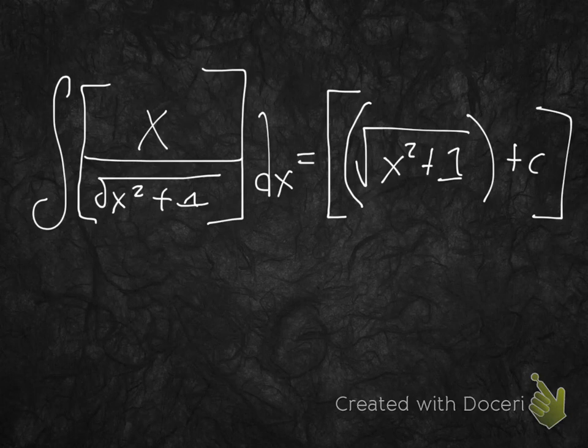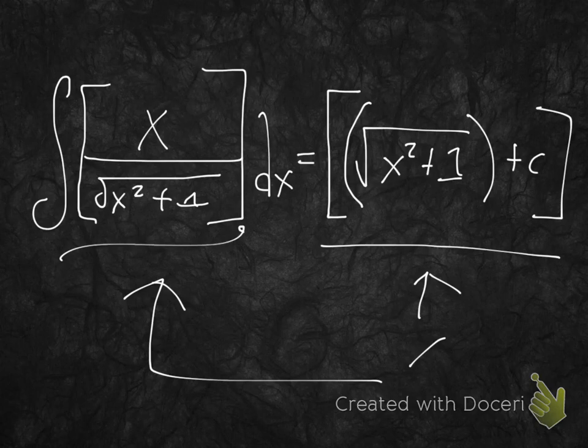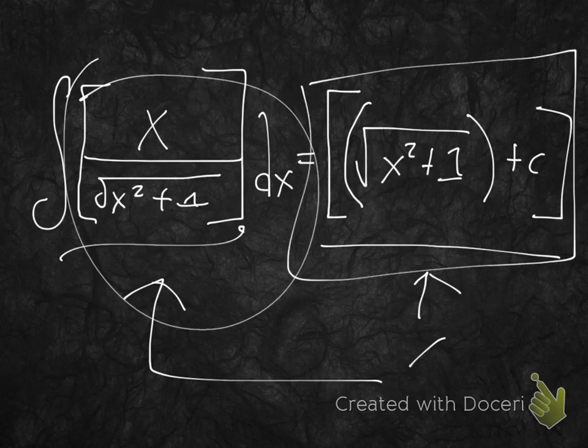wouldn't it be the case that if this is truly the integral of this, then wouldn't all of this, if we take its prime, just give us this? Well, yes, it would. If it's correct, then it will, because since this is the indefinite integral over here on the left, then we know that this over here is the antiderivative, and the antiderivative, if we take its derivative, is going to give us this.